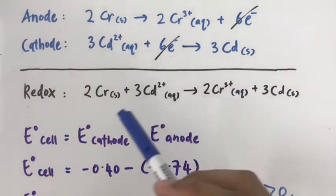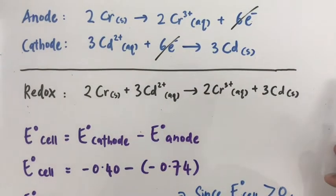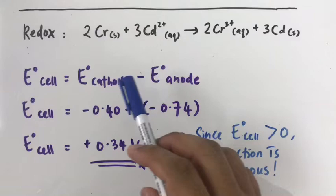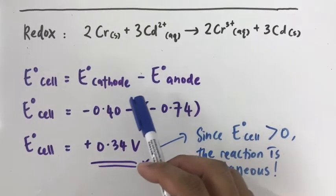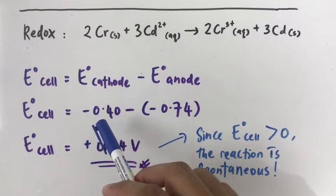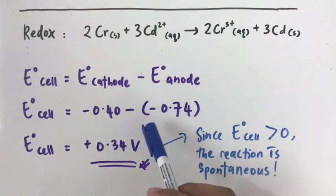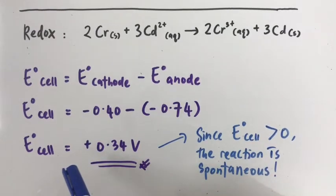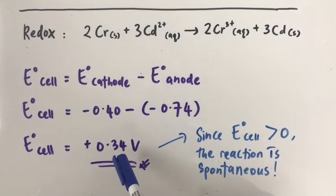So how to calculate the E° cell? We have the formula here where E° cell equals E° cathode minus E° anode. We just need to substitute the values given: minus 0.40 minus negative 0.74 volts. So the overall E° cell is a positive 0.34 volts.